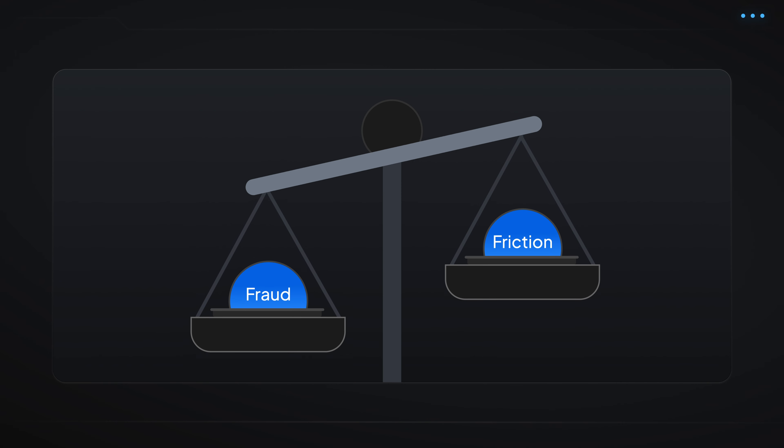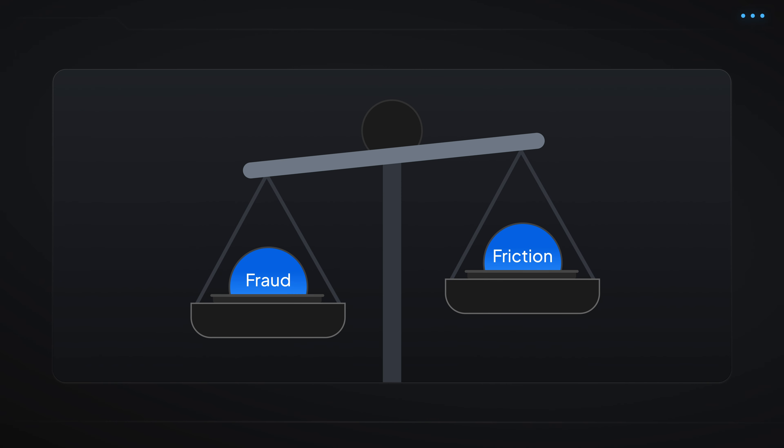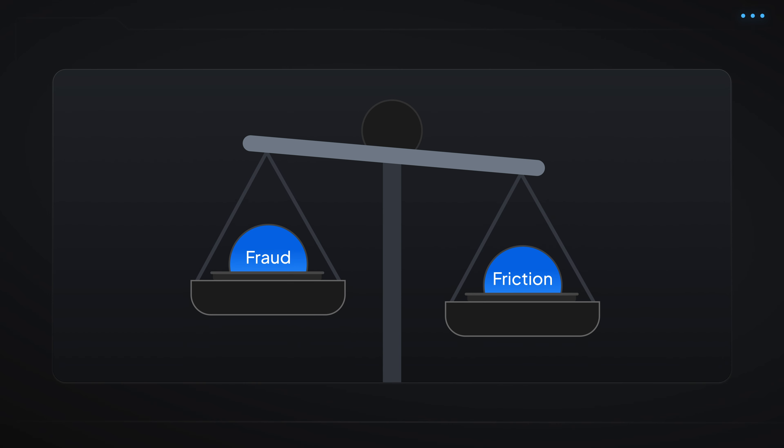So three things can be used in any order — knowledge, possession, inherence — and it could be multifactorial: two factors, one factor, depending upon the value of the asset or whatever you're trying to unlock. Now you've got the framework. But what about payments? What is so special about payments, and why is this thing so relevant to payments?